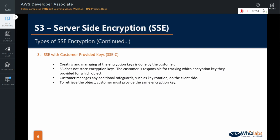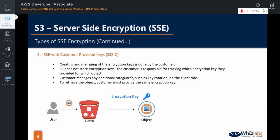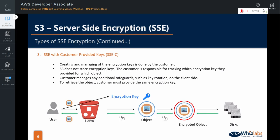Here is how SSE-C works. The user uploads an object to the bucket. S3 then encrypts the object using the encryption key provided by the user. The encrypted object is stored on the disk. While retrieving, S3 uses the same encryption key that was provided by the customer to decrypt the object and returns the original object back to the customer.